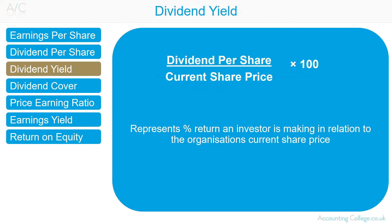Dividend Yield is dividend per share divided by current share price. It represents the percentage return an investor is making in relation to the organisation's current share price. Investors looking for good yields on their investment will be interested in dividend yield, and it is useful as a comparison against other investment opportunities.